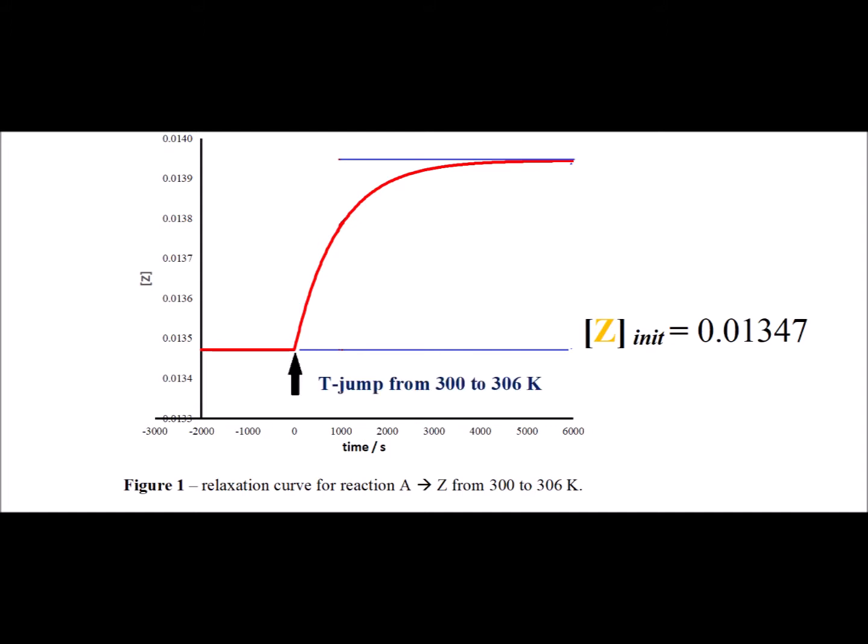Notice at the arrow at time T equals 0, when the red curve begins to rise, that is the point at which we have done the T jump from 300 Kelvin to 306 Kelvin. The red line is not flat, notice that we are no longer at equilibrium once we've done the temperature jump.